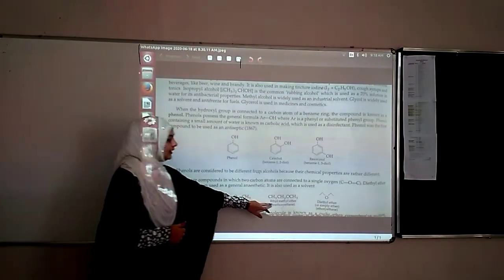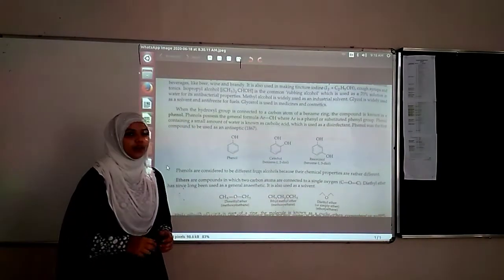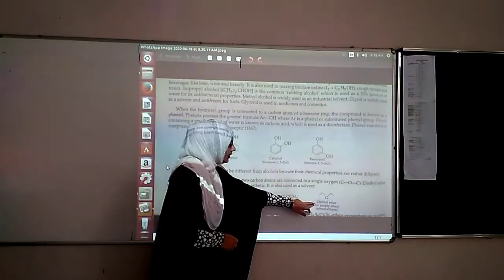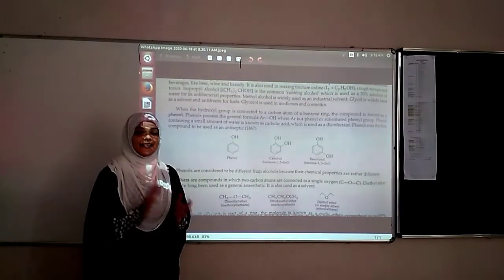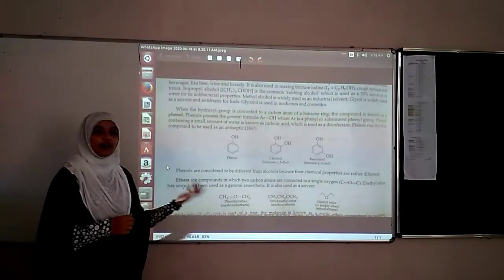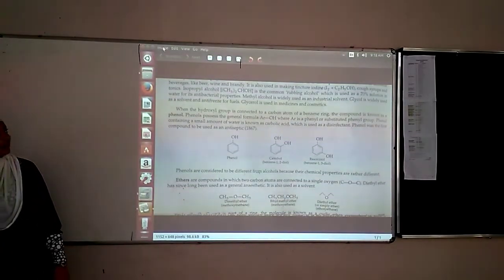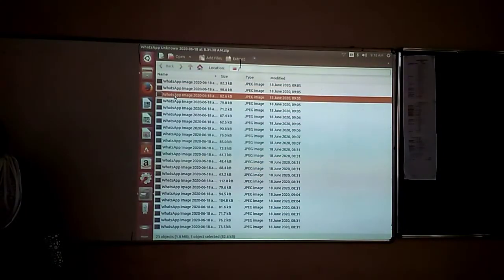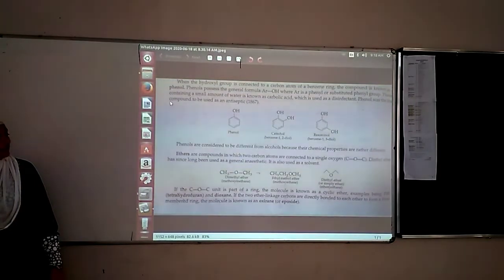But here, your oxygen is attached with methyl group on one side and ethyl group on the other, so you can call it methoxyethane. If both sides are having ethyl groups, it is called diethyl ether. This is how we can go for naming the compounds. This is what we are going to do.